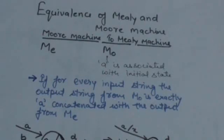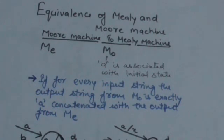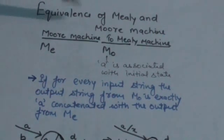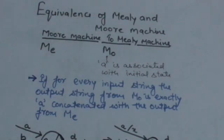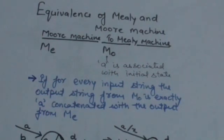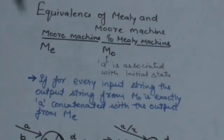Welcome back to the tutorial. Our next topic is Moore Machine to Mealy Machine. It means we have to convert a Moore Machine to a Mealy Machine. Suppose a Moore Machine is given to us and we have to construct a Mealy Machine equivalent to that Moore Machine.